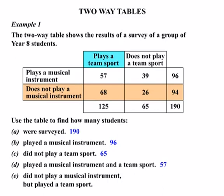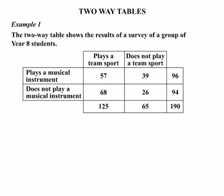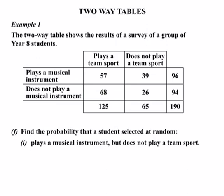Now we find the probability that a student selected at random plays a musical instrument but does not play a team sport. We look at those who play a musical instrument across that row, and those who don't play a team sport in that column. There are 39 students at that intersection, out of the total of 190 students. So the probability as a fraction is 39 over 190.